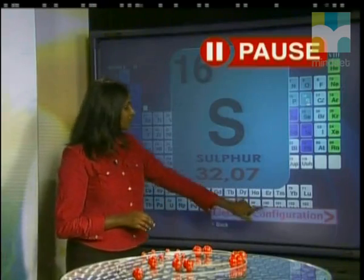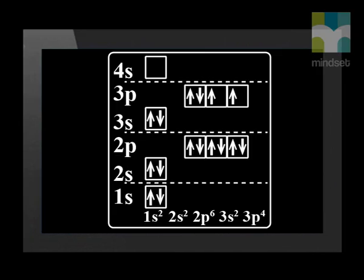Here is the energy level diagram for sulfur. The electron configuration is 1S², 2S², 2P⁶, 3S², 3P⁴. Notice that sulfur also has two unpaired electrons, just like oxygen, and the last part of their electron configuration is similar.